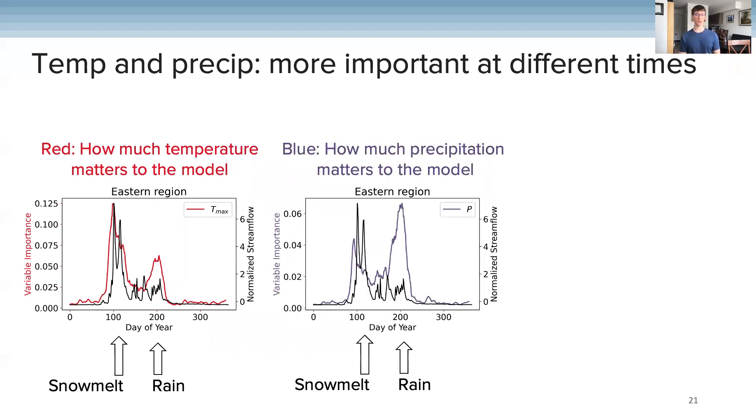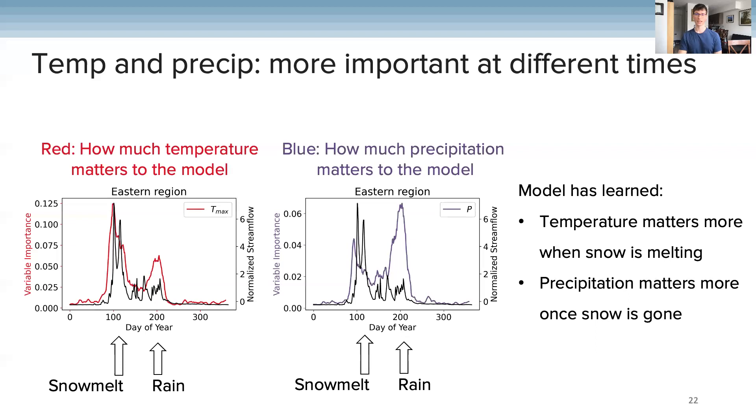And here in blue is how much precipitation matters to the model. We see the opposite, where the model thinks precipitation is most important during summer, and that's when rain is driving streamflow. So it's really interesting to see that the model has automatically parsed out the relative importance of climatic drivers and how they vary through time in correspondence with when the physical drivers of streamflow change from being snowmelt to being rainfall.